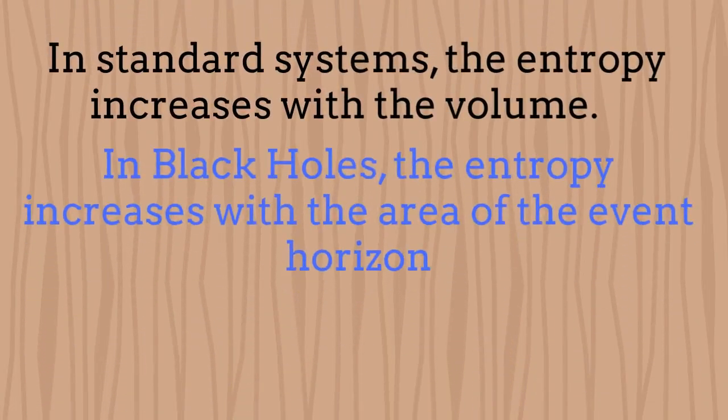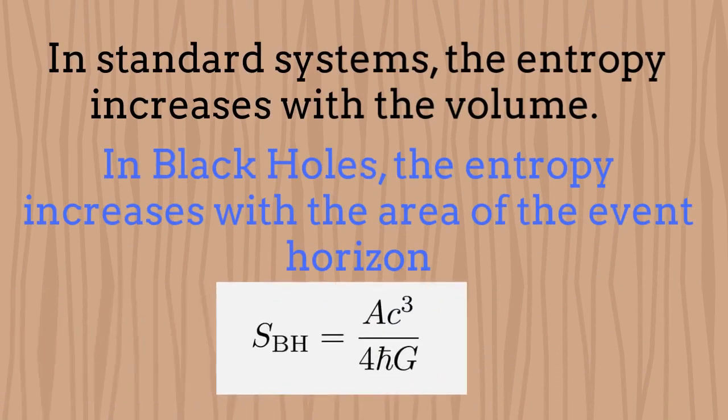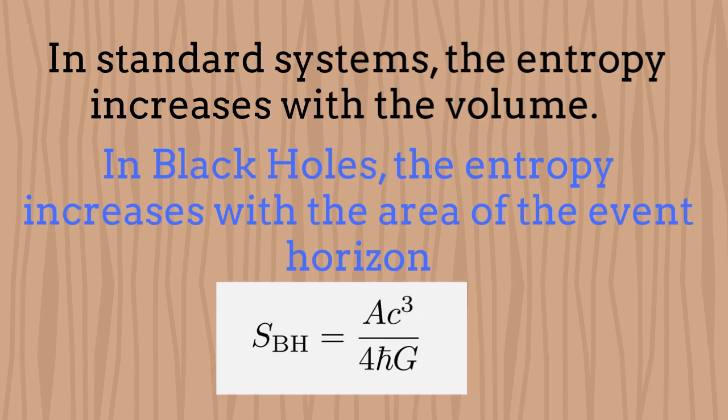One fundamental difference between black holes and ordinary systems is the functional dependence of the entropy with the geometry. The entropy of an ordinary system increases with its volume while the black hole entropy is proportional to the area of the event horizon. This means that all the information inside the black hole is just projected on its surface.